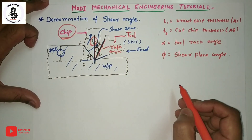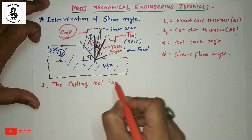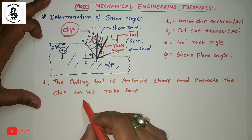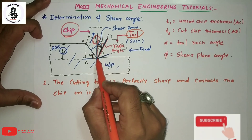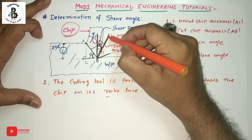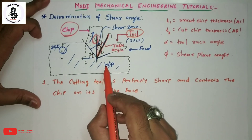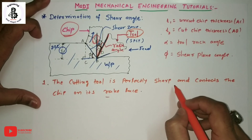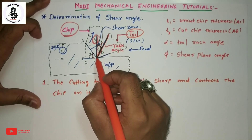Before starting the determination of shear angle, let us see some of the assumptions made in orthogonal cutting. First assumption: the cutting tool is perfectly sharp and contacts the chip on its rake face. The tool has perfect sharp teeth and is in contact with the chips only on the rake face. The rake face makes an angle with the vertical plane equal to the rake angle.